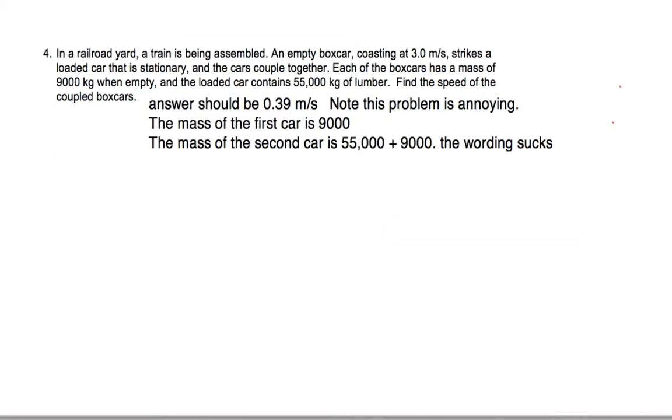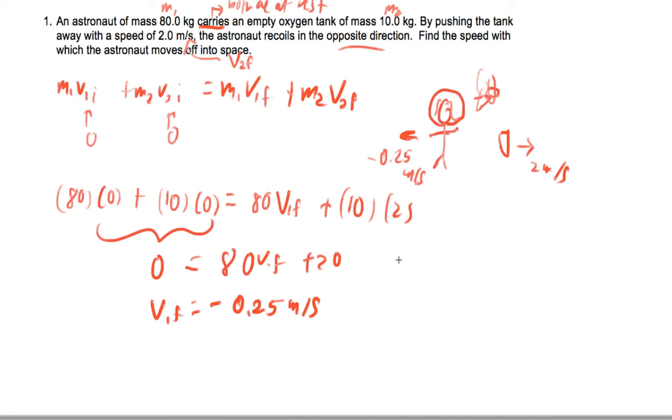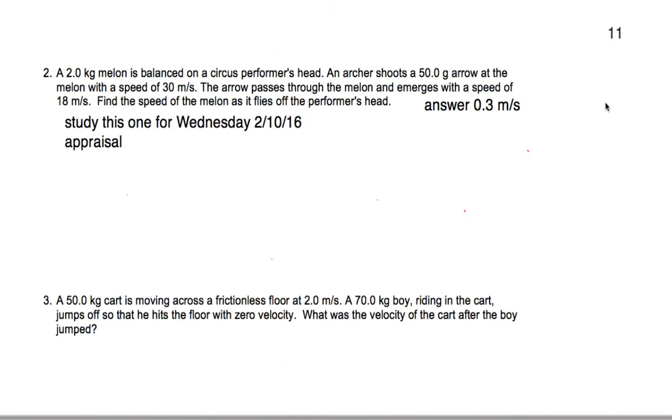All right, next problem, let's take a look at problem number two on the next page. And so we have a 2 kilogram melon balanced on a circus performer's head. So that's going to be our M1. An archer shoots a 50 gram arrow, that's actually going to be 0.05 kilograms. And this arrow has a speed V2 initial of 30 meters per second. V2 final, the arrow emerges at 18 meters per second, and we want to know the speed of the melon.